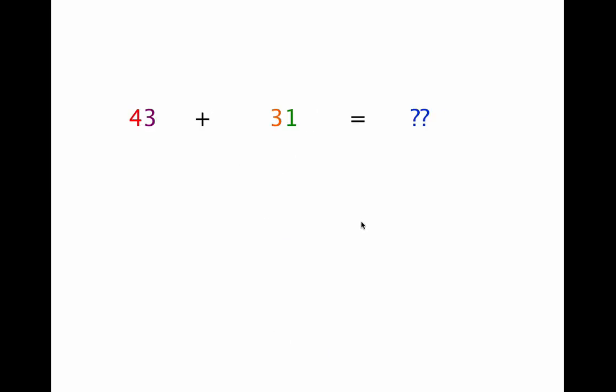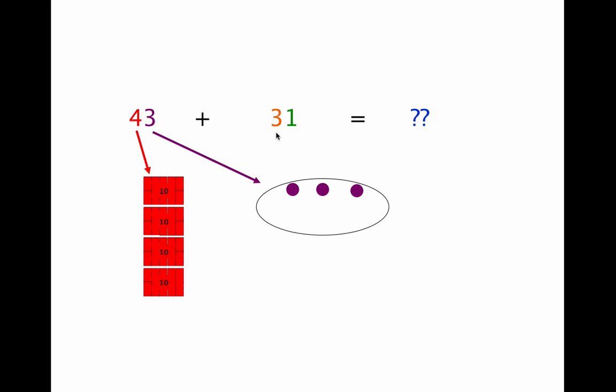Let's try another problem and use both ways to solve it. Here we are doing 43 plus 31. Let's start with the illustration method that uses boxes and dots. In the number 43, we have 4 tens, so we draw 4 ten boxes. And we have 3 ones, so we draw 3 dots. Now in the number 31, we have 3 tens, so we draw 3 ten boxes. And we only have one one, so we draw one dot.